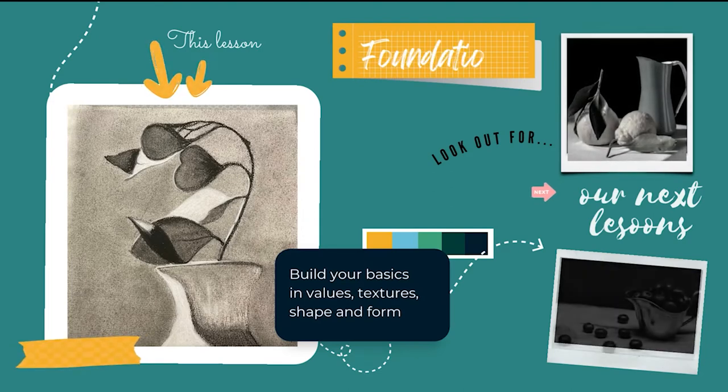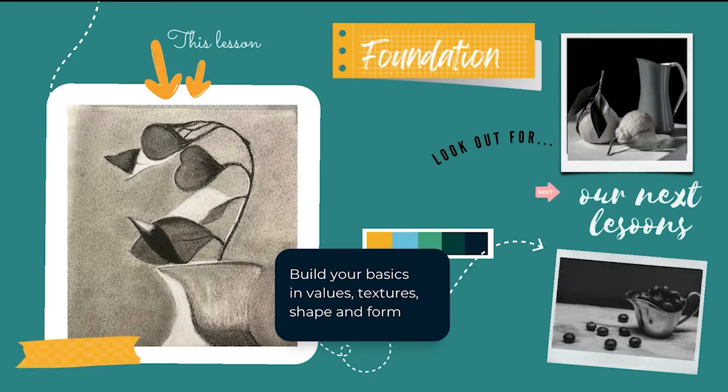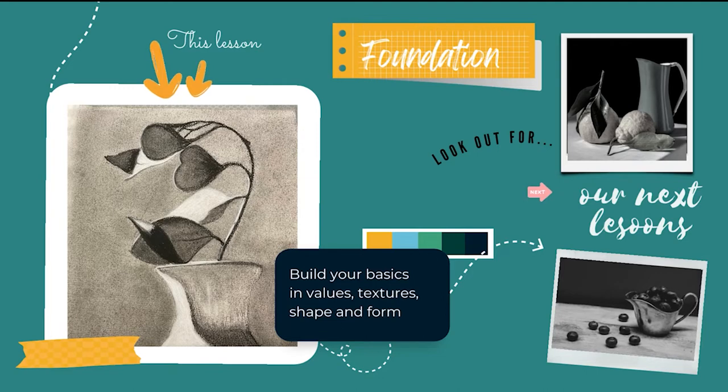For the next courses in this foundational series, we have two more still lifes to explore. First will be the vase with the oranges, where we explore the rough texture of the oranges against the smooth metal texture of the vase. The second still life is an extension where we'll be drawing blueberries with their soft texture against a rusted metal cup on a wooden board. We're adding a little bit more complexity as we go through the courses.